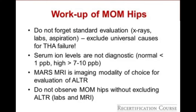When working up the painful metal-on-metal hip, do not forget the standard evaluation for all painful total hip arthroplasties — just because the patient has a metal-on-metal hip does not mean the failure is due to that bearing. Serum metal ion levels are not diagnostic. Normal is less than 1 part per billion; levels above 7 to 10 parts per billion are concerning. The MARS MRI (Metal Suppression Protocol MRI) is the imaging modality of choice. A metal-on-metal hip should be observed cautiously only if the patient is completely asymptomatic and adverse local soft tissue reaction has been excluded.